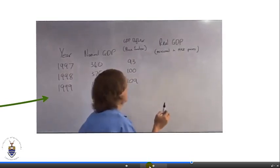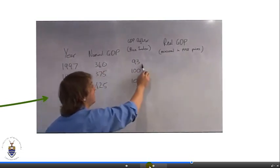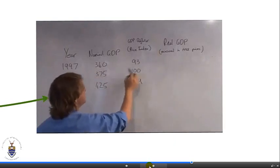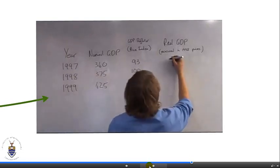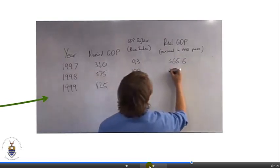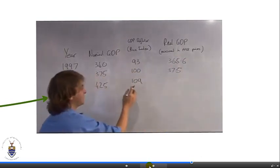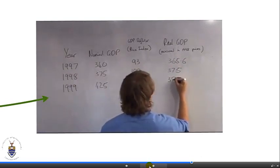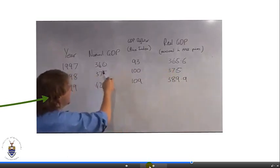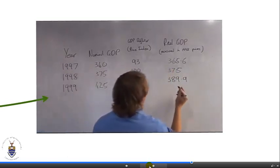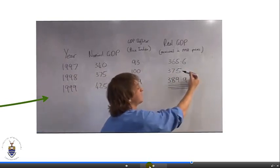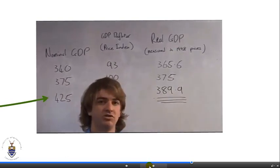To work out real GDP, you take nominal GDP and divide by the price index — this is also known as the GDP deflator. So real GDP equals nominal GDP divided by the price index. For example: nominal divided by 93 gives 365.6; 375 divided by 100 gives 375; and 425 divided by 109 gives 389.9. This gives you the actual increase in production over those years, whereas nominal GDP gives you the increase in the value of production. Real GDP is far more important — from it you can take percentage changes to work out the actual growth rate in the economy.